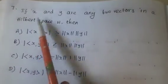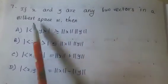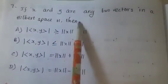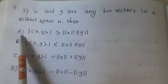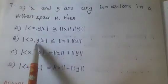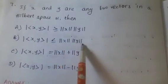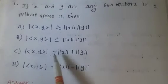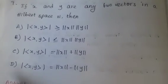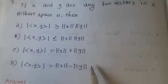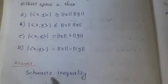Seventh question: If X and Y are any two vectors in Hilbert space H, then the modulus of inner product X, Y equals 4X minus 4Y. This is the correct answer.